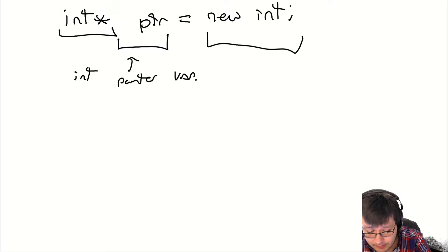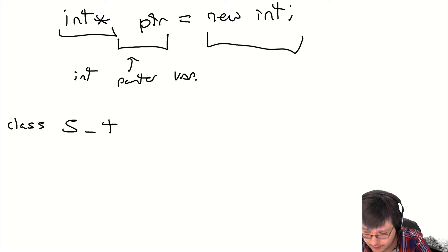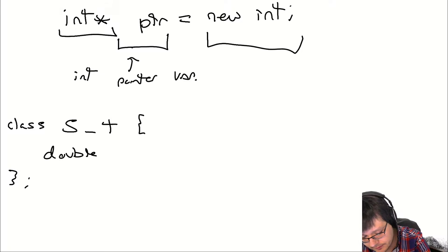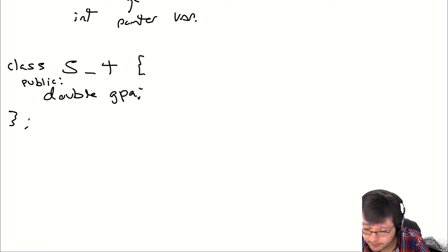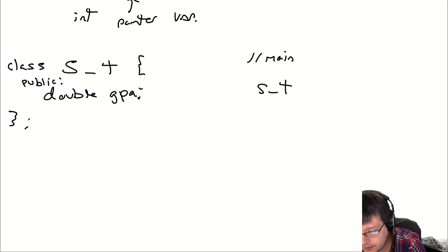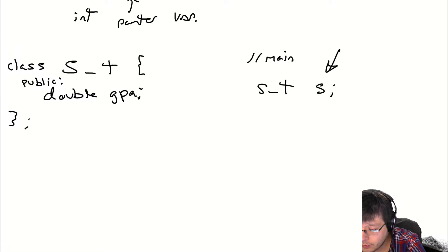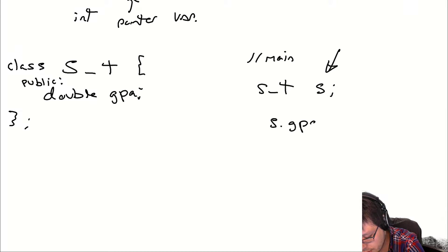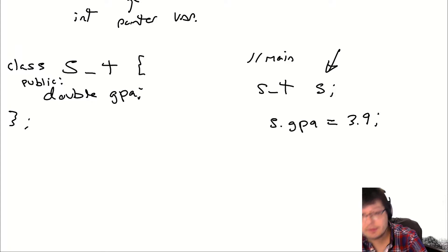Let's talk about making an object of a class. Suppose I have a struct or class called StudentType, and in that class I have a double GPA. We'll make it public so we don't need getters and setters. In main, if you want to create an object of this class, you do `StudentType s`, and now s is an object. If we want to access the GPA inside of s, we do `s.gpa = 3.9`.